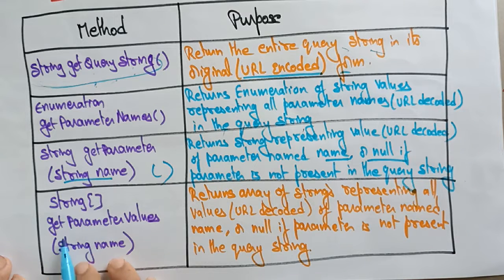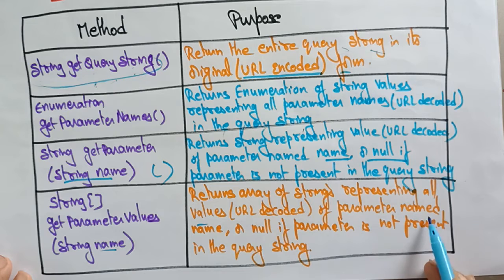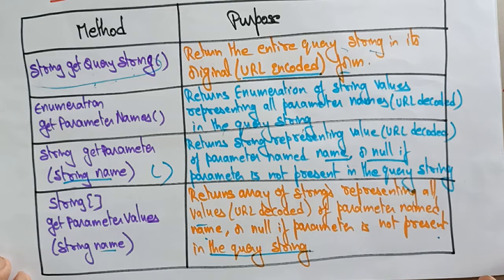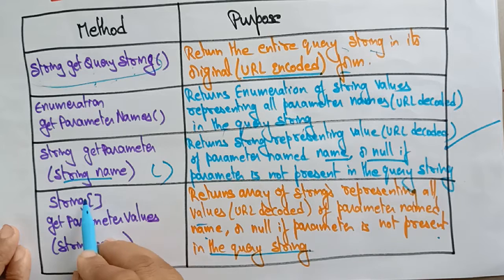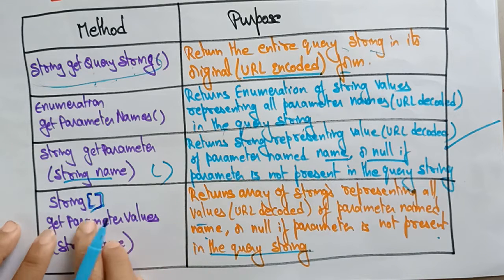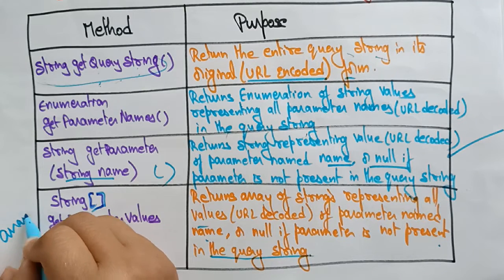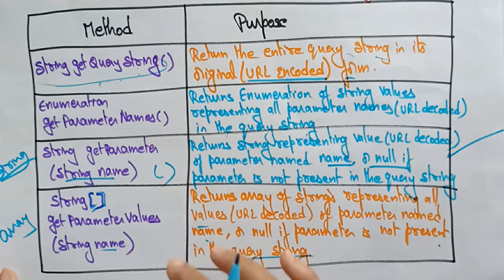The next method is String[] getParameterValues(String name). It returns an array of strings representing all URL-decoded values of the parameter with the given name, or null if the parameter is not present in the query string. So getParameter() returns a single string, while getParameterValues() returns an array.